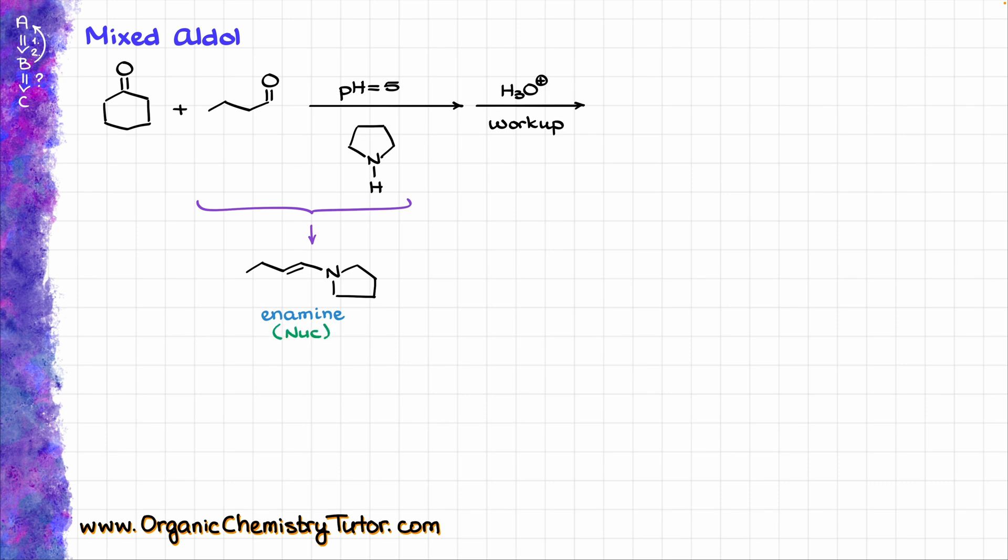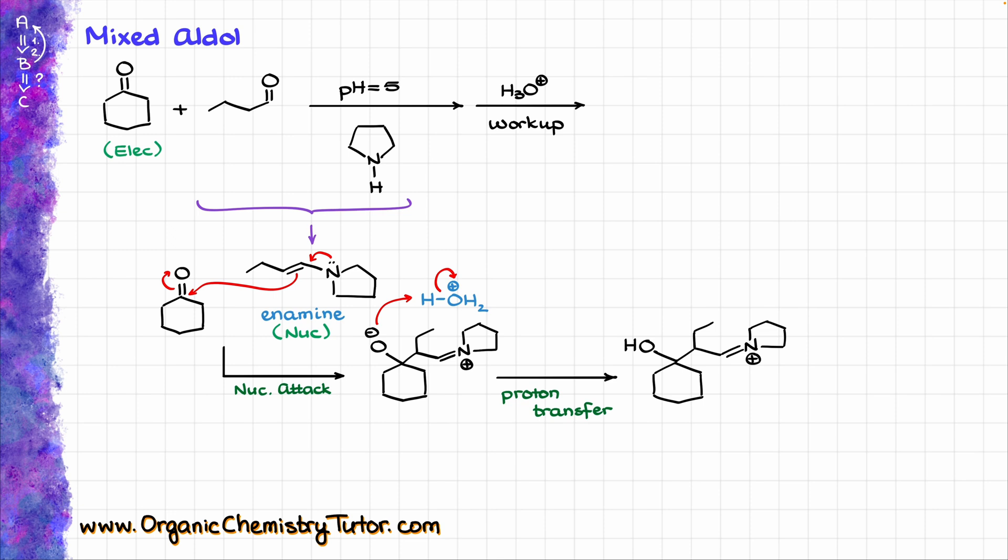In this case, I will have the enamine attacking my carbonyl like so, giving me the following intermediate. After the acidic workup, so I will show my water over here, water is going to protonate my O minus like so, giving me the following intermediate. Then from here we are going to continue with our hydrolysis, eventually giving us the final product looking like this.